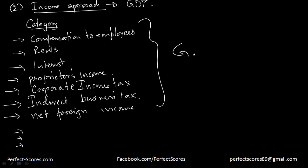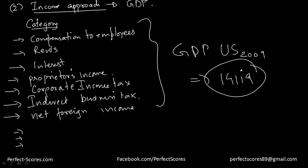If you find the GDP of the US for 2009 using the income approach, you would find that if you add up all the incomes they add up to the same figure — which means both the expenditure approach and the income approach give you the same result.